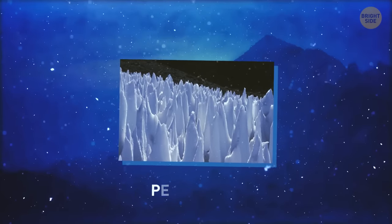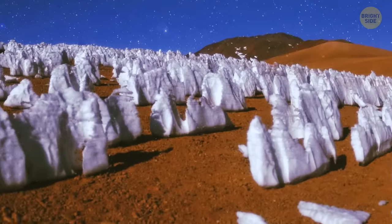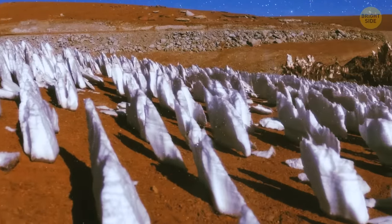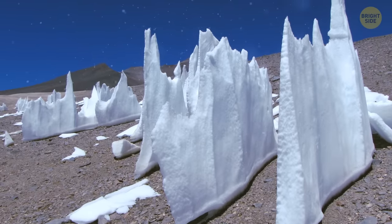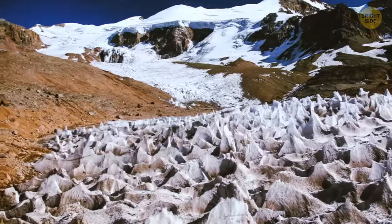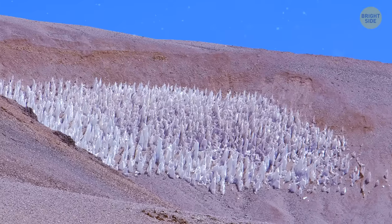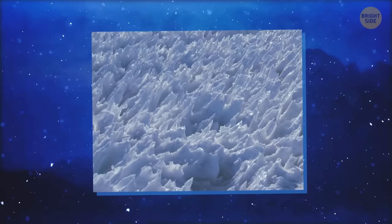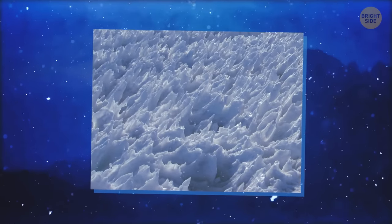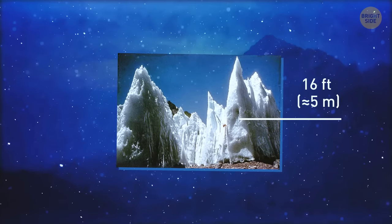Another amazing ice phenomenon is called penitentes. These are snow formations found at very high altitudes. Numerous and closely spaced, they look like long, thin blades of hardened snow or ice that point towards the sun. These icy spires grow over snow-covered and glaciated regions in the dry Andes at a height of more than 13,000 feet. Some penitentes are just several inches tall, while others reach 16 feet — that's around three human heights.